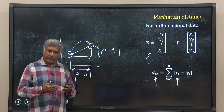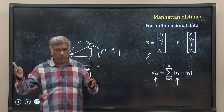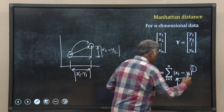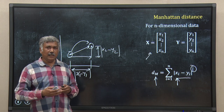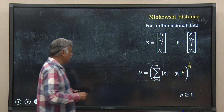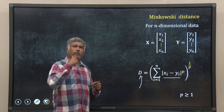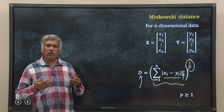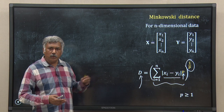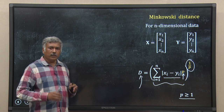There is a clear pattern: Euclidean distance uses squared terms and takes a square root, while Manhattan distance uses power 1. When we generalize this, we get Minkowski distance: take the absolute difference |Xi minus Yi|, raise it to the power p, sum those values, and take the p-th root. When p equals 1, it is Manhattan distance; when p equals 2, it is Euclidean distance. p should always be greater than or equal to 1.